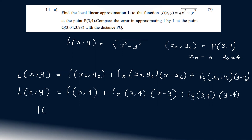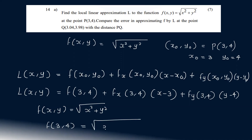f(x,y) = √(x² + y²). So f(3,4) = √(3² + 4²) = √(9 + 16) = √25 = 5.